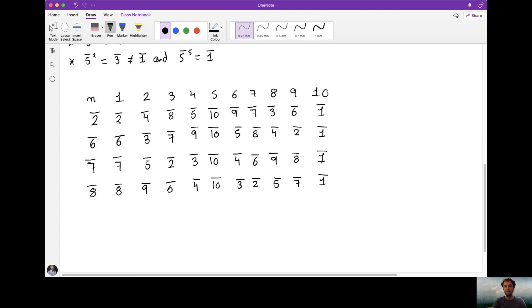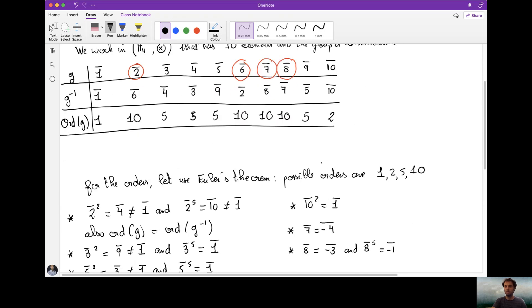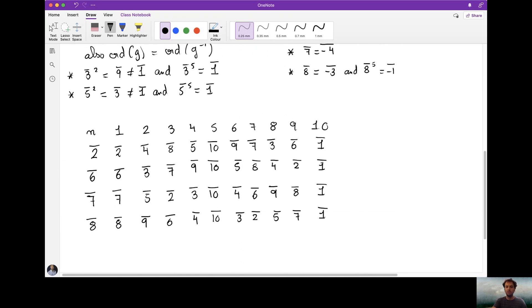Good! So that completes the exercise about cyclic groups. It doesn't get much more difficult than that, what we do with cyclic groups. Just remember to use Euler's theorem to find the possible orders, and those are the only powers that you need to compute when you're checking for an element to be a generator or not of the group.